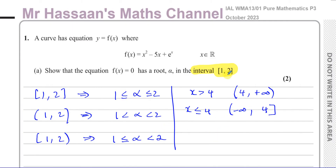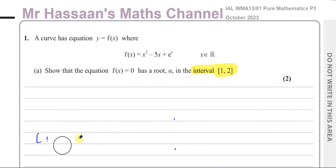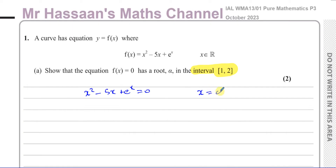So the root alpha has a value somewhere between one and two — somewhere between one and two there's going to be the root of this equation. The root means basically the solution. So f of x equals zero, meaning x squared minus 5x plus e to the power of x equals zero, has a solution somewhere between x equals one and x equals two. We've got to show that that's the case.